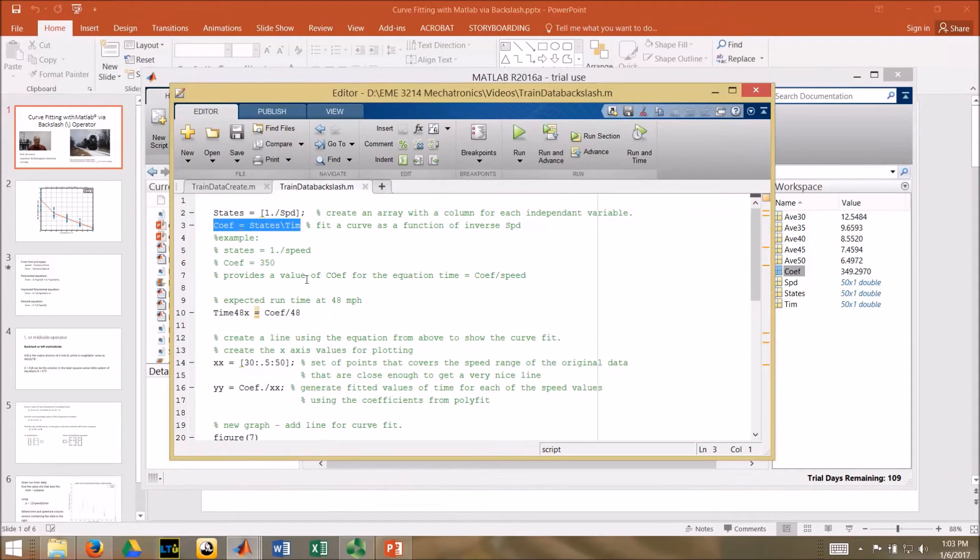What that means is that essentially we can use this coefficient value divided by any particular speed and we will get an estimate of the time to go from Detroit to Chicago.